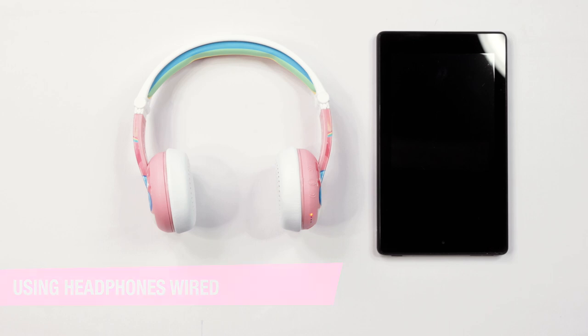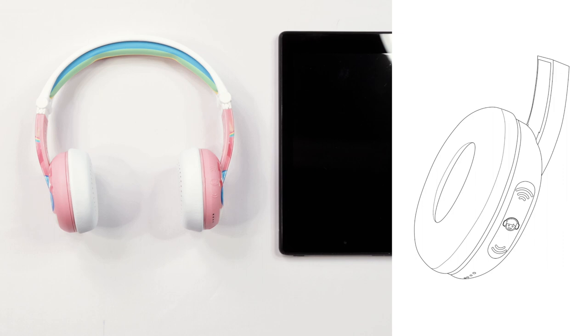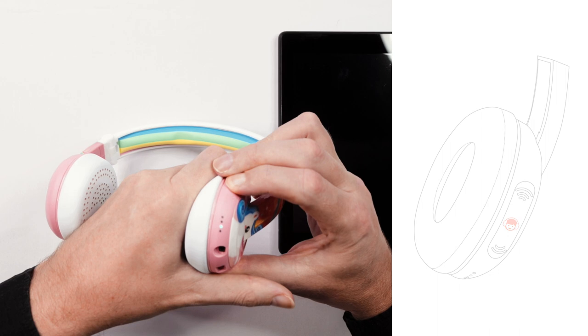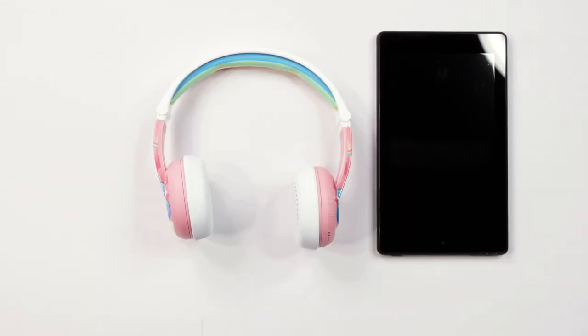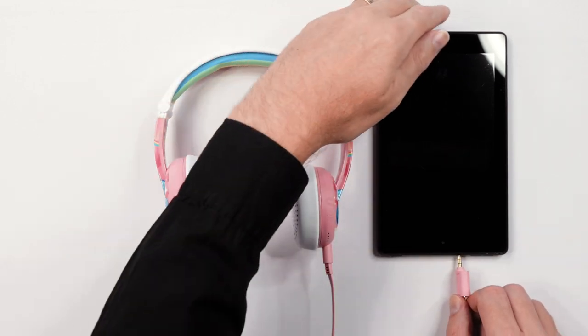To use your headphones in wired mode, first power off your headphones by holding the multi-function button down for three seconds. Next, take your audio cable and connect it to your headphone. Finally, connect the other end of the cable to your device.